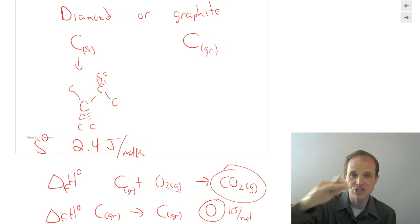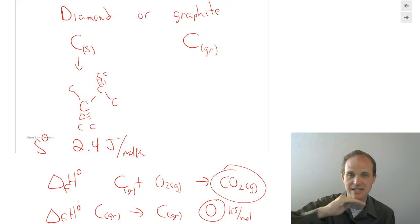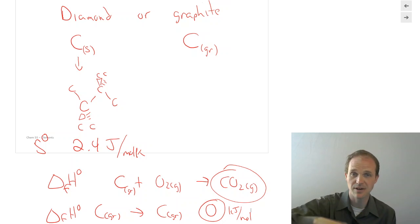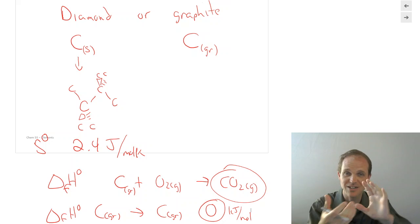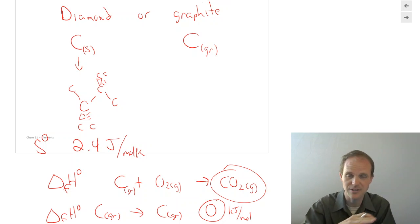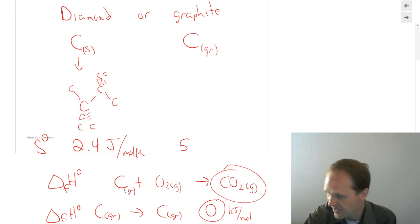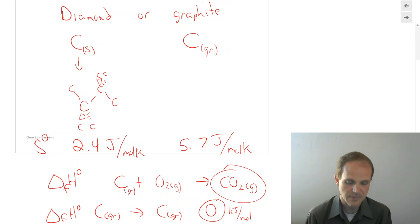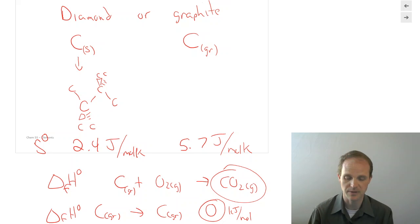Graphite is made up of sheets that are very tightly bonded within the sheet but very loosely bonded across sheets, so the layers can be sheared off — that's why graphite pencils write on paper. You'd expect higher entropy because there are more ways of arranging things that are not rigidly connected; they can slide on each other. And yes, carbon graphite has a higher entropy of 5.7 joules per mole Kelvin — more than double the entropy of diamond — because there are more ways of arranging the carbon atoms.